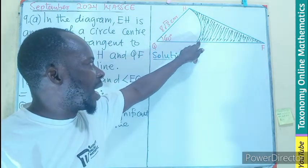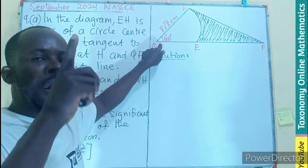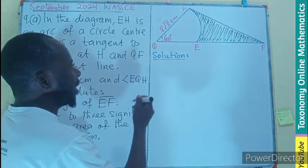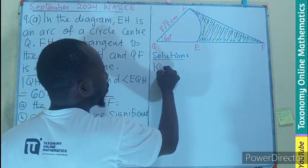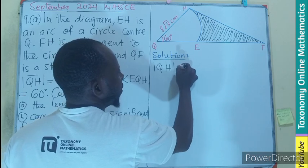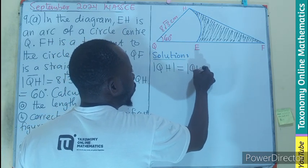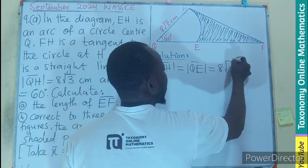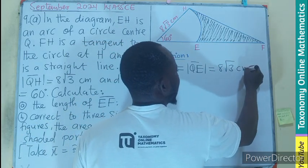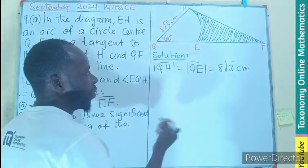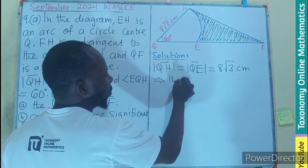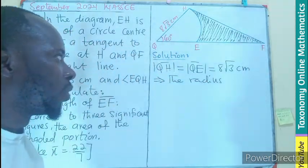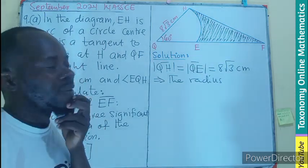Since EH is an arc, a line from the circumference to the center gives us a radius. So QH and QE both become radii. I can say that the length of QH is equal to the length of QE, and that equals 8√3 centimeters. That becomes the radius.